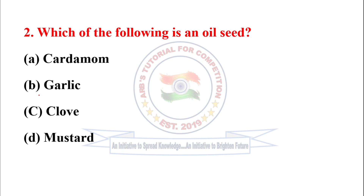Which of the following is an oil seed? We know that we get mustard oil from mustard seeds, so among the four options, option D is the correct one. Please remember that cardamom, garlic, and clove are very important to boost our immune system against the attack of different bacteria, viruses, etc.